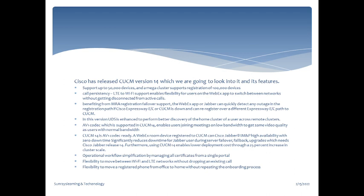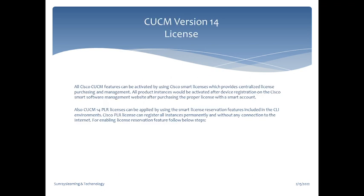Another feature is remote phone use — when a user is using a phone in the office and wants to use that same phone at home, there is no need to reconfigure it. CUCM 14 allows you to use that phone in your home environment without onboarding or reconfiguration. Additionally, there is a centralized Cisco Smart Licensing feature through which you can purchase or delete any licenses in your environment.